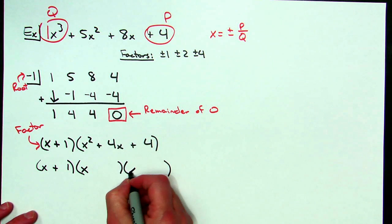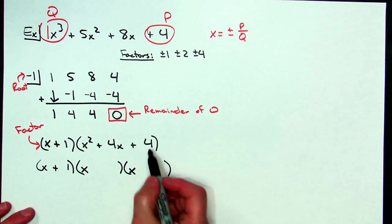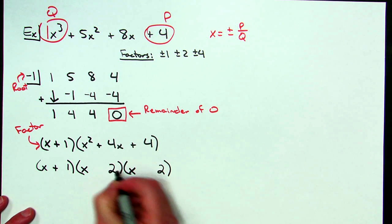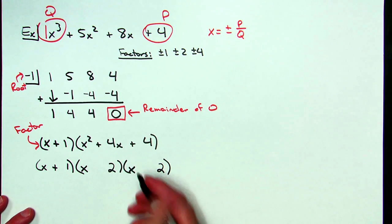I think this will be a guess and check type factoring on trinomials. I'm going to take factors of four which would either be a one and a four or two and a two. I'm going to use a two and a two so that I get my middle term of a positive four x.